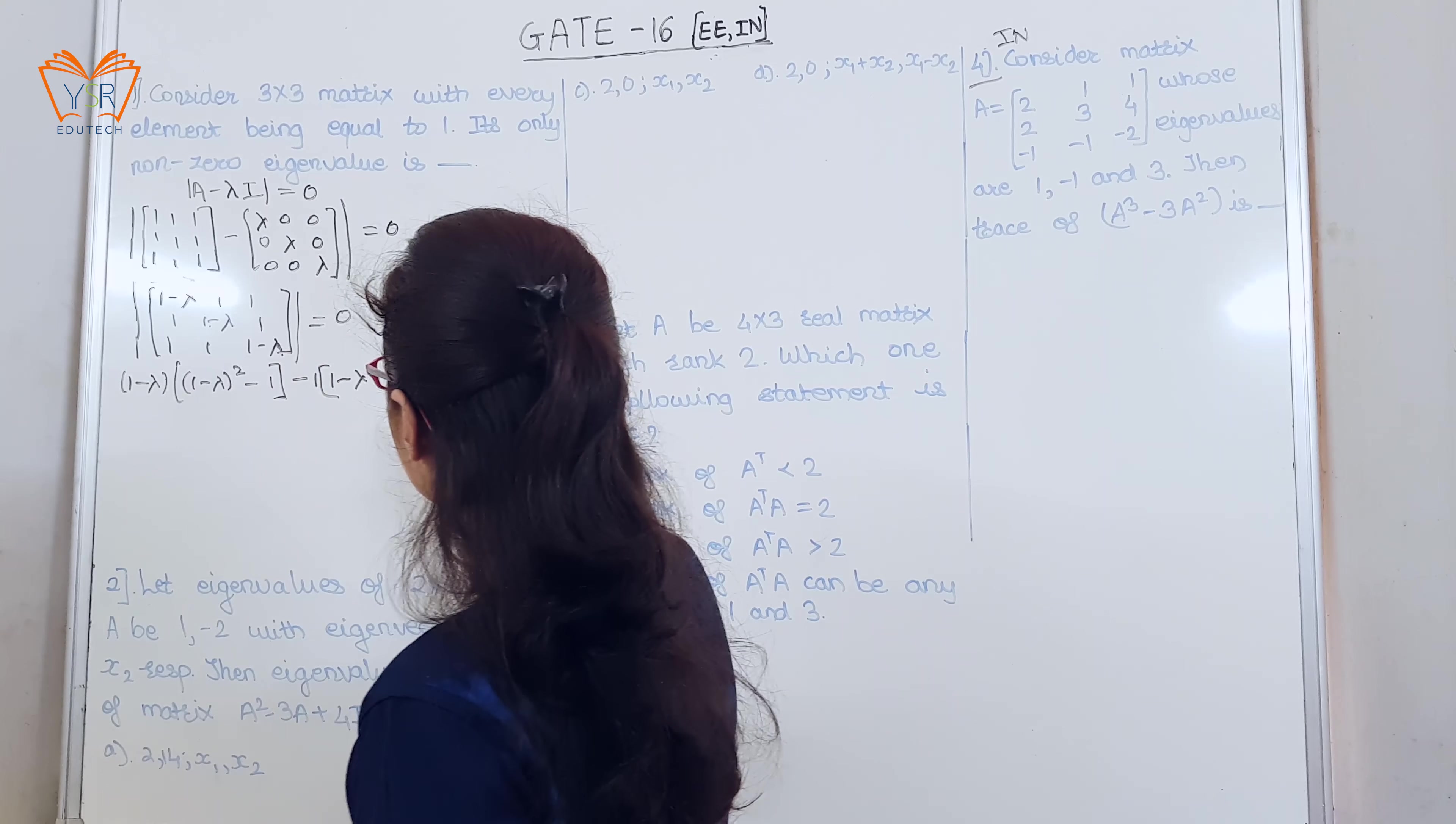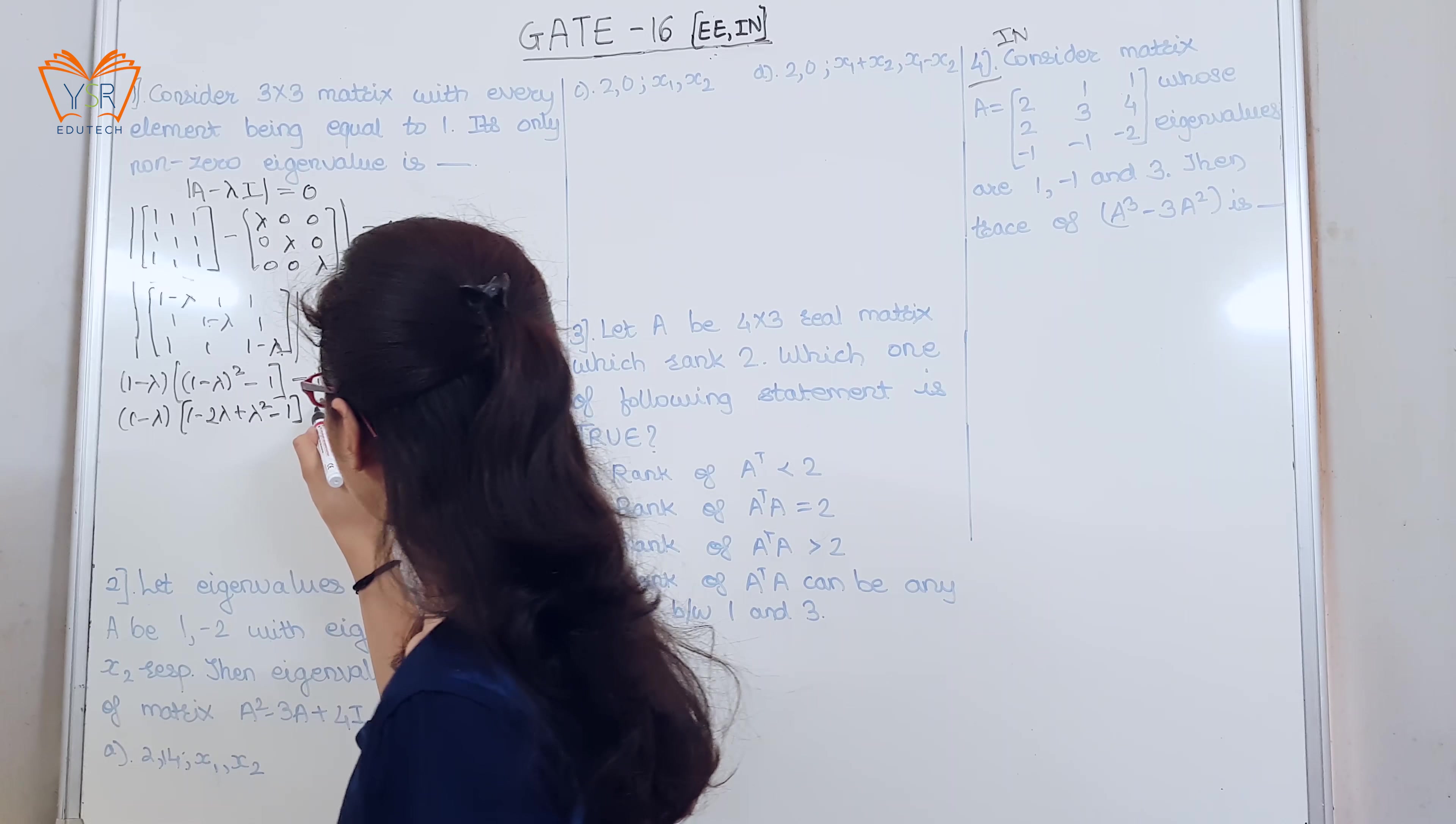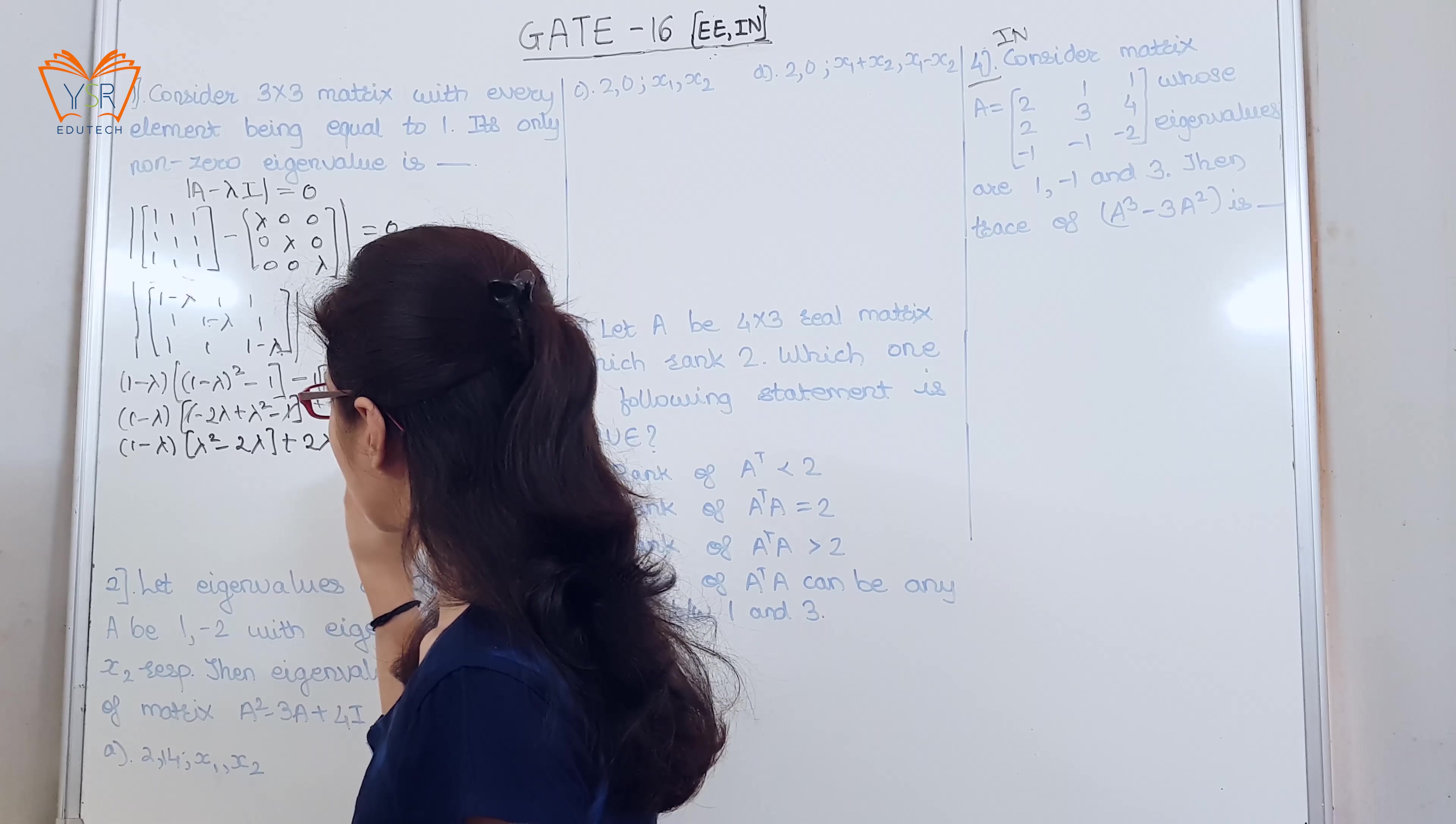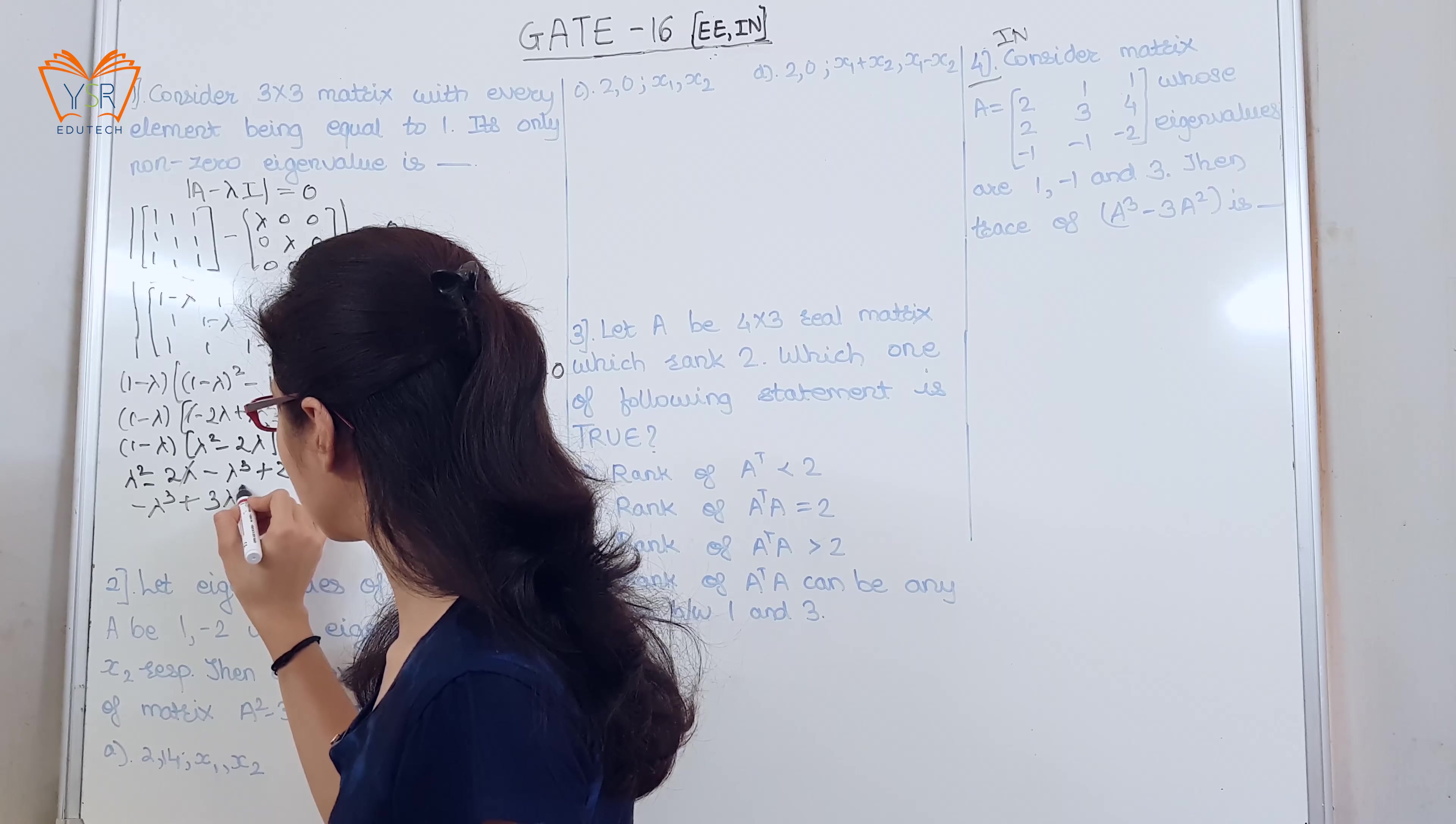So 1 minus lambda minus 1 plus 1, 1 minus 1 minus lambda plus lambda. Here it is equal to 0. So 1 minus lambda, 1 minus lambda minus 1 minus lambda and here plus lambda is equal to 0. Further solving we get, cancel plus 2 lambda. Now, multiply this bracket inside lambda square minus 2 lambda minus lambda cube plus 2 lambda square plus 2 lambda is equal to 0.